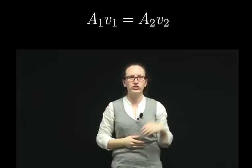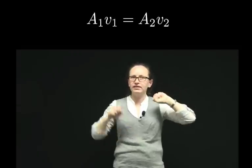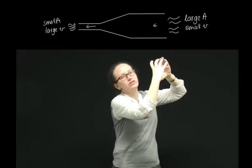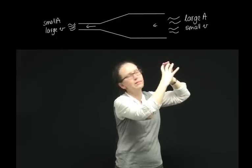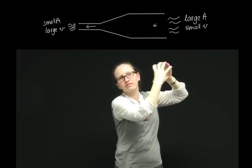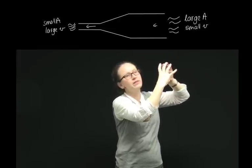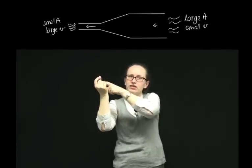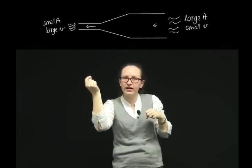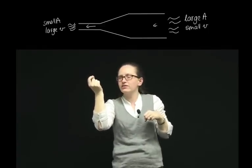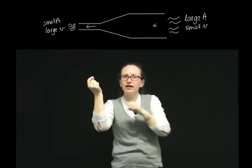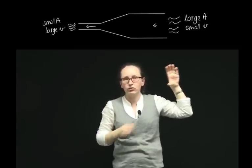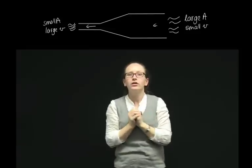This gives us the equation A₁V₁ is equal to A₂V₂. So if we have a wide end of the pipe, then this has a very large surface area, and a narrow end of the pipe has a very small cross-sectional surface area, and so the velocity must be much greater through the narrow pipe than through the wide pipe.